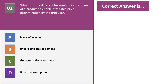So what is the essential condition for profitable price discrimination by a supplier? The right answer to question number two is B — the price elasticity of demand must be different between different segments within the market.